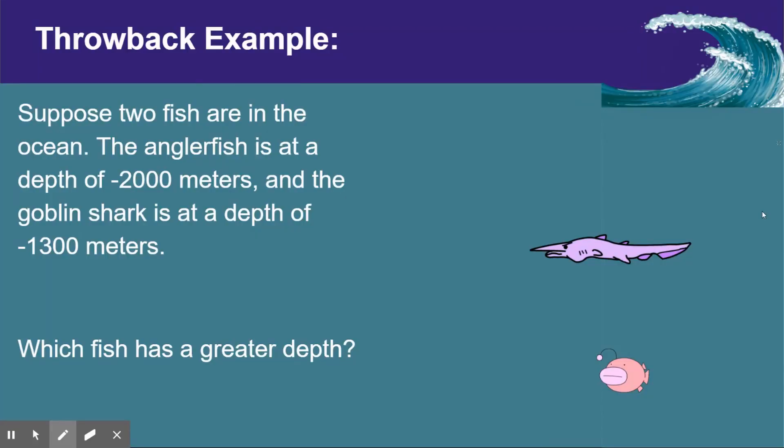So this problem may look familiar. If you watched the 2.3 video, it should look very familiar. Suppose we have two fish in the ocean. We have the angler fish down at negative 2,000 meters and the goblin shark at a depth of negative 1,300 meters. This time, we're going to figure out which fish has a greater depth.